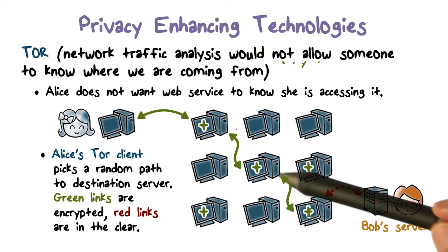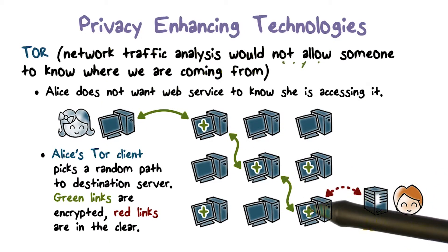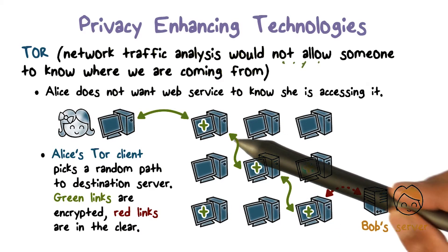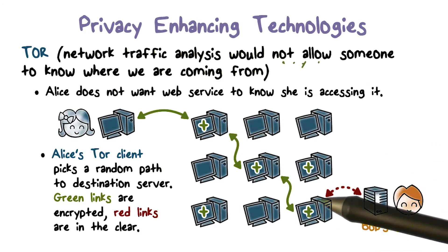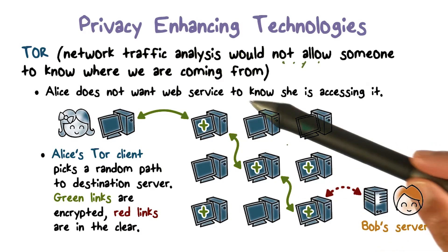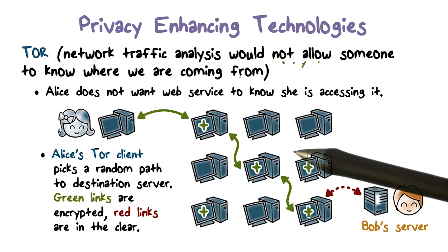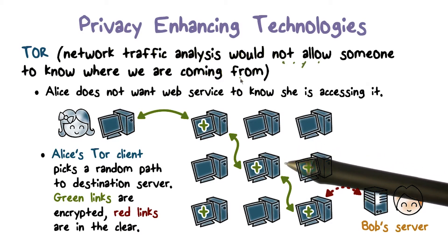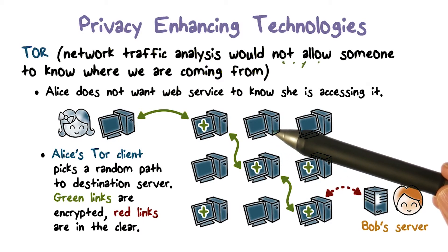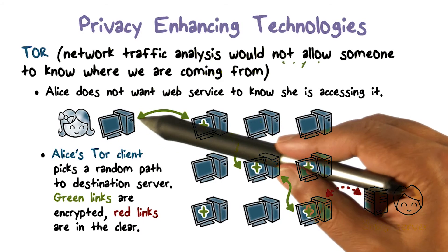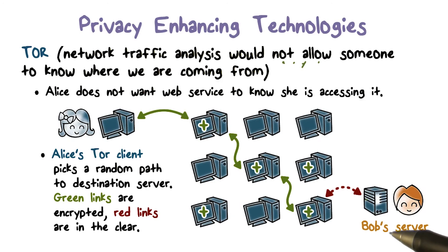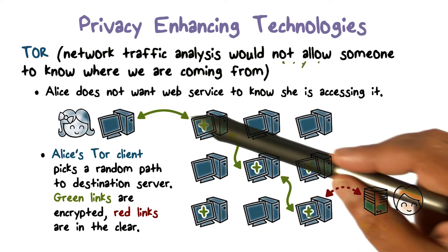They don't know the full path. As a result, with traffic analysis, no one is going to be able to figure out that Alice is visiting Bob's website, unless they have control of all these nodes — and the likelihood of that would be much less.